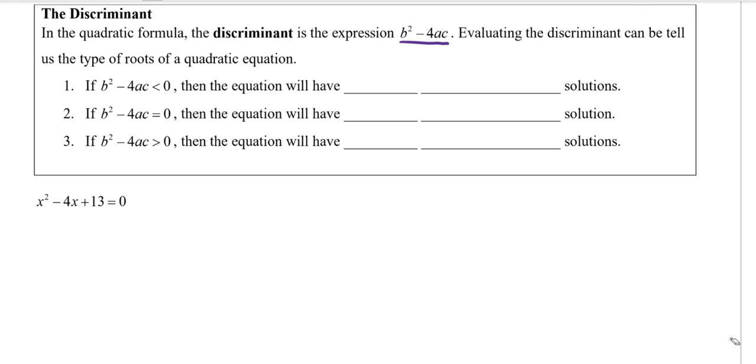Evaluating the discriminant can tell us the type of roots that we have for a quadratic equation, so the types of solutions. It can also tell us how many solutions we have, so it tells us both the number and the type of solutions.